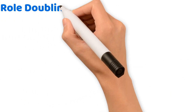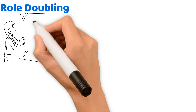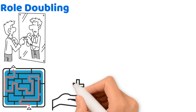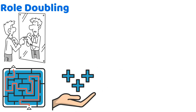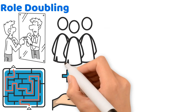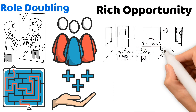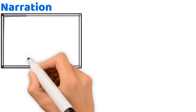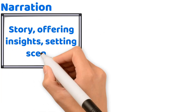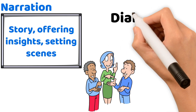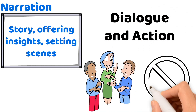Role doubling is where an actor portrays multiple characters, adding complexity to the performance and offering economic benefits to the production — it demonstrates actors' versatility and provides a rich opportunity to discuss characterization in the classroom. Narration helps to bridge gaps in the story, offering insights, setting scenes, or commenting on the action in ways that dialogue and action alone might not convey.